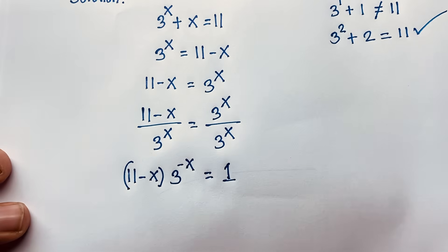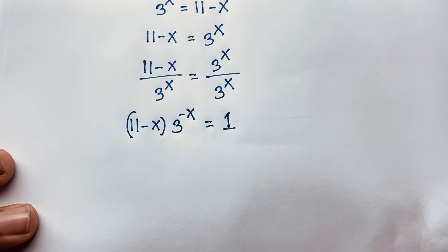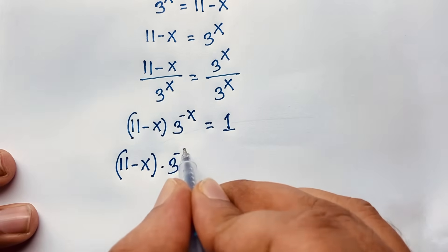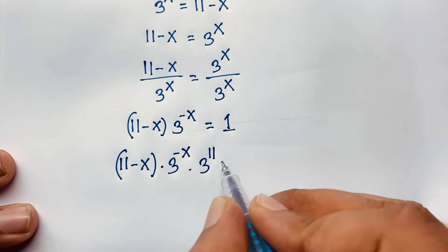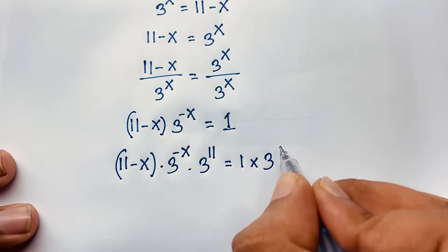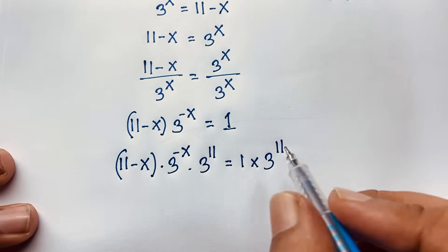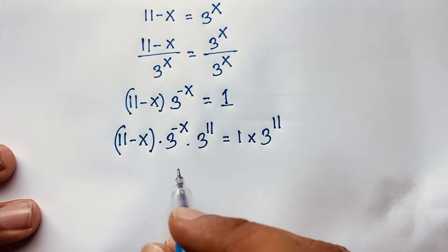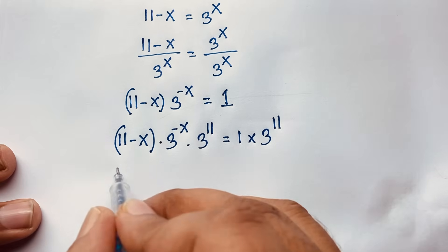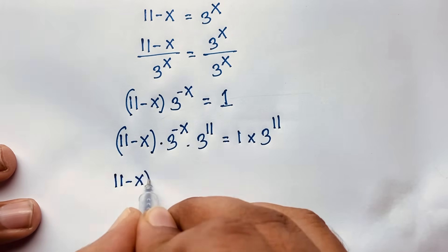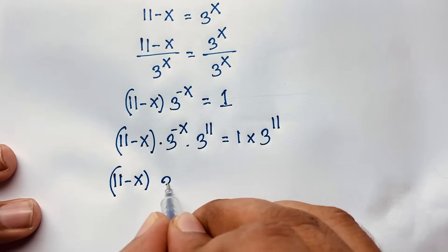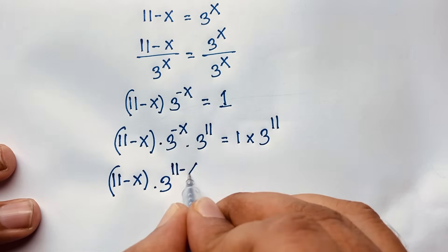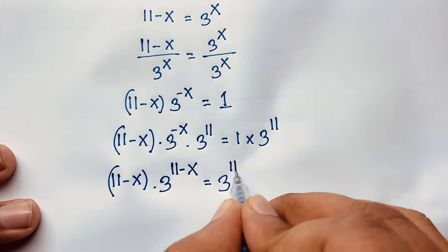Now at this moment: 11 minus x times 3 to the power negative x times 3 to the power 11, and here is 1 times 3 to the power 11. I multiply both sides by 3 to the power 11. Because I want to use the Lambert W function. So at this moment: 11 minus x times 3 to the power — adding the exponents — it will be 11 minus x is equal to 3 to the power 11.